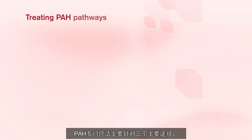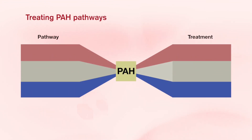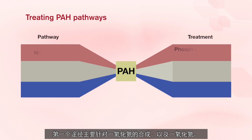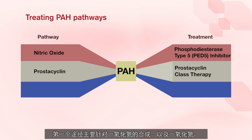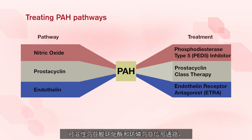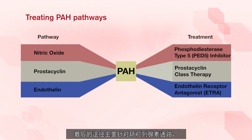PAH-specific therapy mainly targets three main pathways. The first pathway targets the synthesis of nitric oxide as well as the nitric oxide, soluble guanylate cyclase, and cyclic GMP signalling pathway. The second group of medication targets endothelin receptors, and the final pathway targets the prostacyclin pathway.